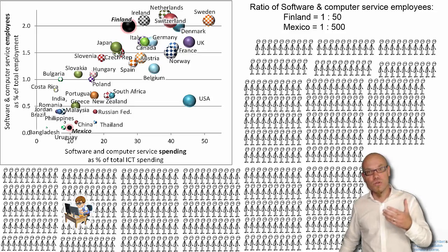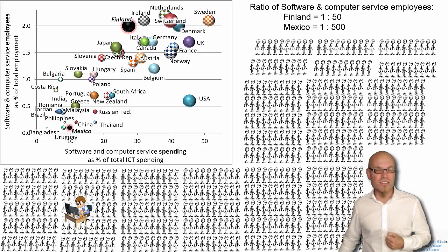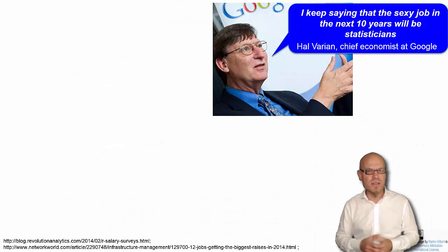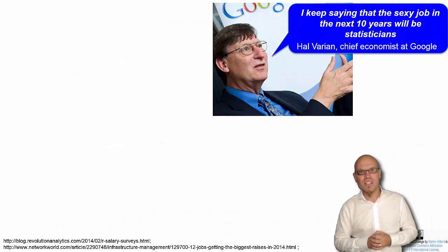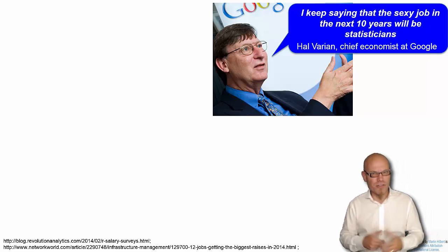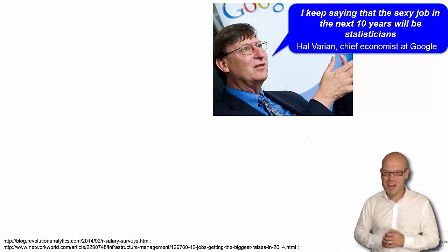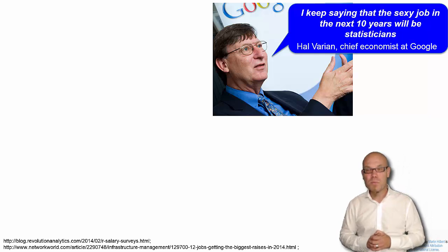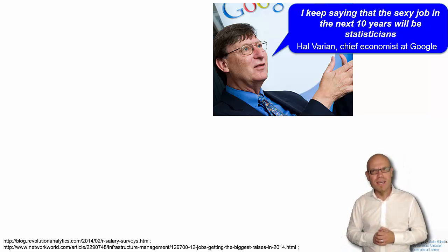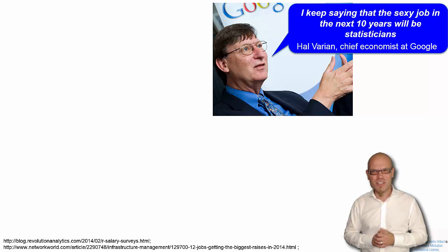That has to do with the software and computer service industry, but increasingly, since this also has to do with databases and statisticians — and to say it with the words of Hal Varian, a former professor at the University of California Berkeley at the iSchool and now chief economist at Google — he keeps saying that the sexy job in the next 10 years will be statistician.